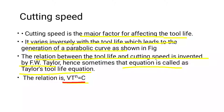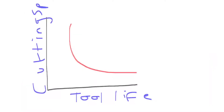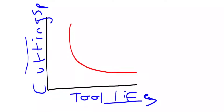Let's see the relationship between cutting speed and tool life. Here, the Y-axis is tool life and the X-axis is cutting speed. This is the parabolic curve of cutting speed (V, in m/min) versus tool life (T, in minutes).